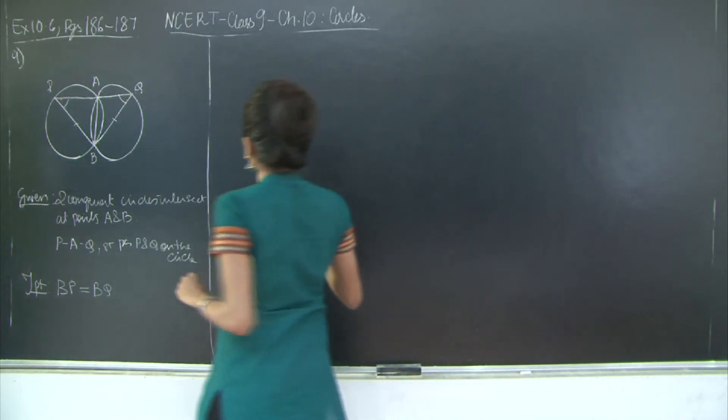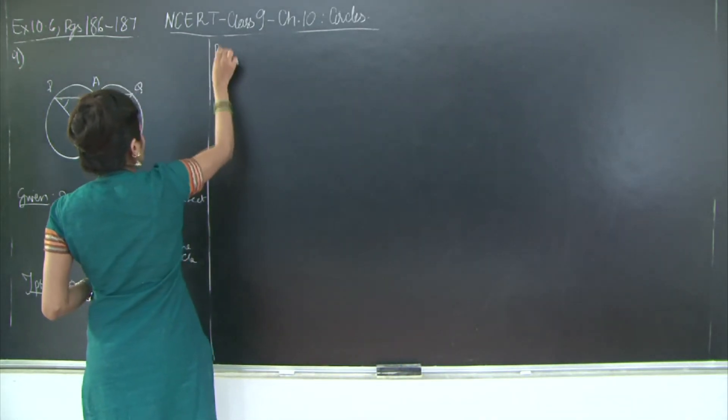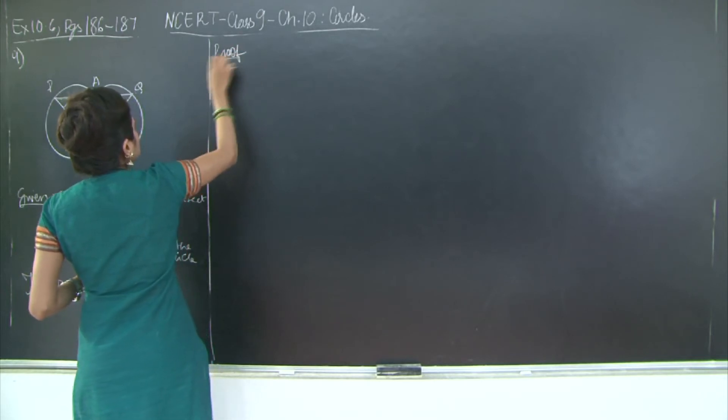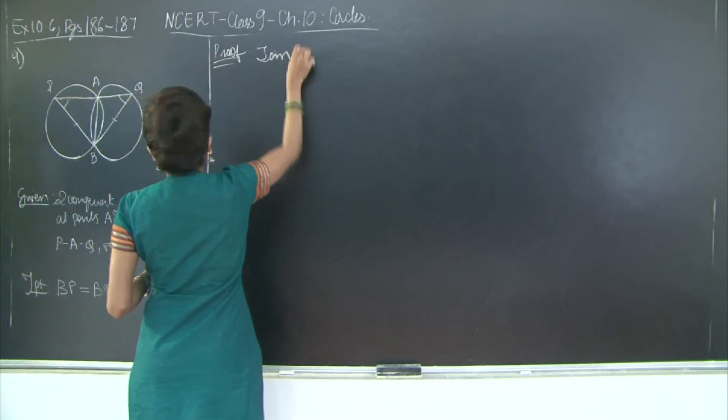Let's go ahead and write the solution with the proof, with the construction. So proof: join AB.